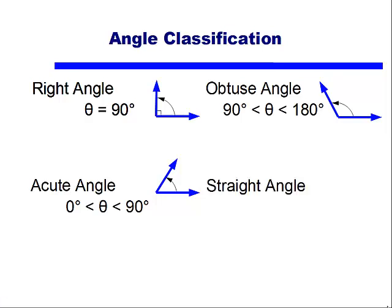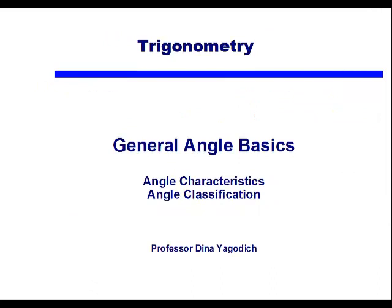And our last angle is called a straight angle, and that is an angle that is exactly equal to 180 degrees. And that is how we define an angle and how we classify them.